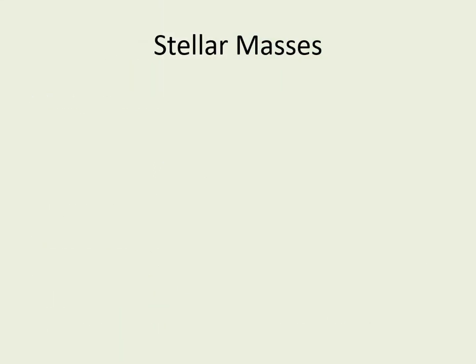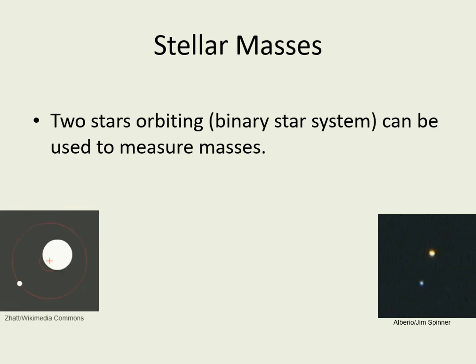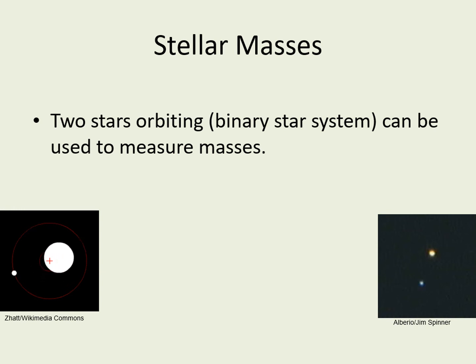One more thing we'd like to be able to measure about stars is their mass. Back in the chapter on motion and energy, we saw that you can use orbits to measure the masses of objects, because orbits depend on gravity and gravity depends on mass. Fortunately, many stars are in binary or multiple star systems, meaning two or more stars stay in orbit around each other because they're pulled together by their mutual gravity. If we can measure the orbital speed and the distance between the stars, we can find their masses.